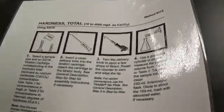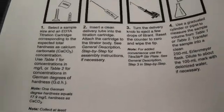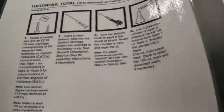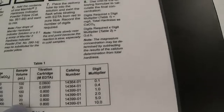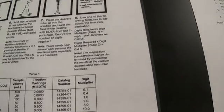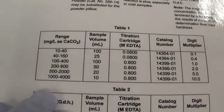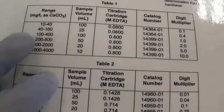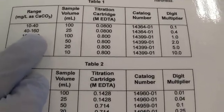First thing we've got to choose is the sample volume and whether we need to dilute it. We go to the chart and choose the range we believe it's going to be and the amount of sample. This is for the calculation near the end. I have no idea what's in our water, so I'm just going to say it will probably be between 40 and 160.